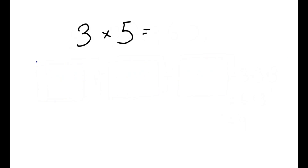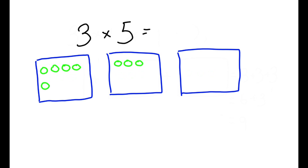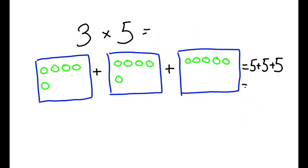3 times 5 means there are 3 boxes, and each box has 5 circles, and the answer is the total number of circles, which is 5 plus 5 plus 5, which equals to 10 plus 5. The answer is 15.